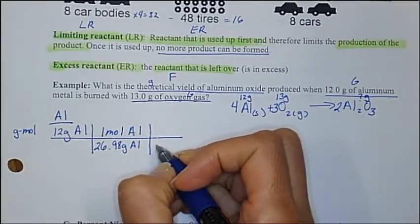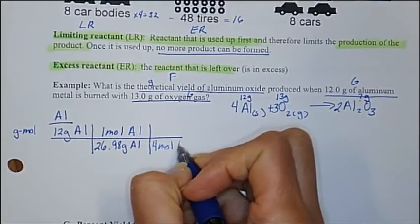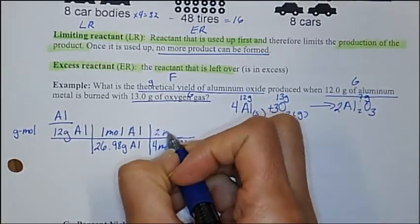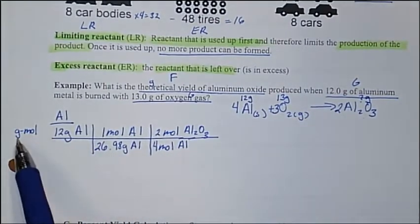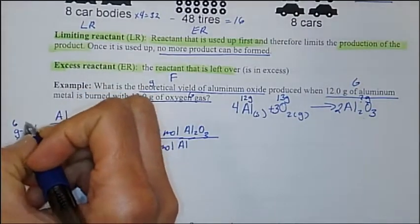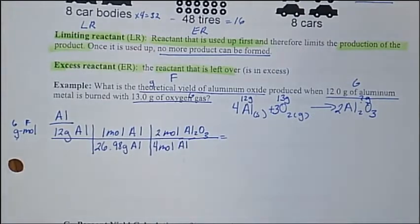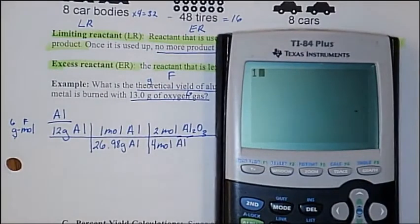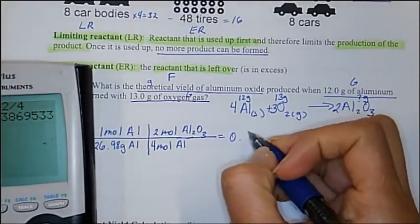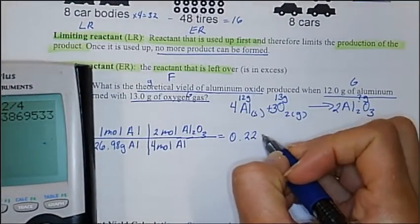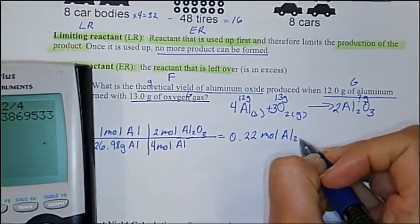According to my equation, I have 4 moles of aluminum to every 2 moles of aluminum oxide. So I went from grams of my given to the moles of what I want to find. Plugging that into my calculator — 12 divided by 26.98 times 2 divided by 4 — I get 0.22 moles of aluminum oxide.